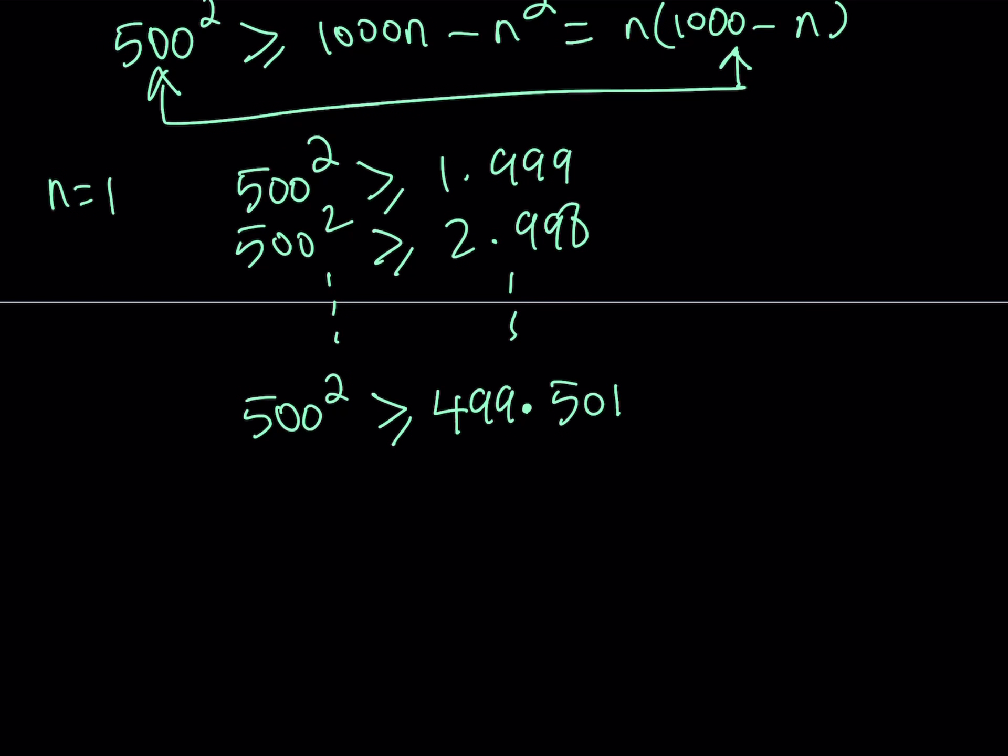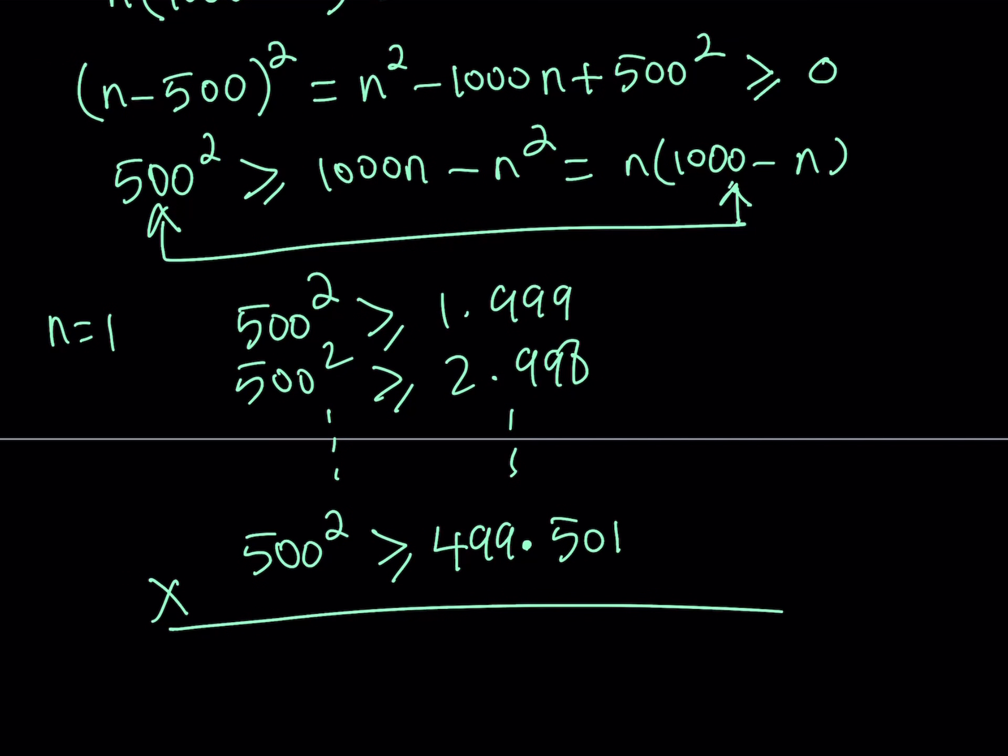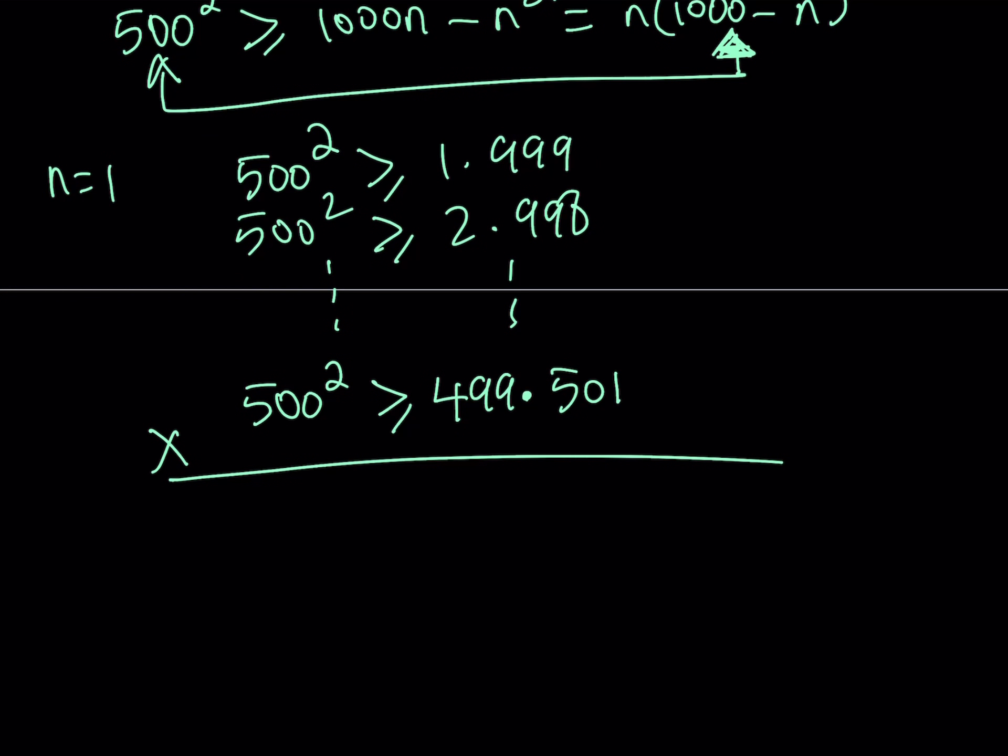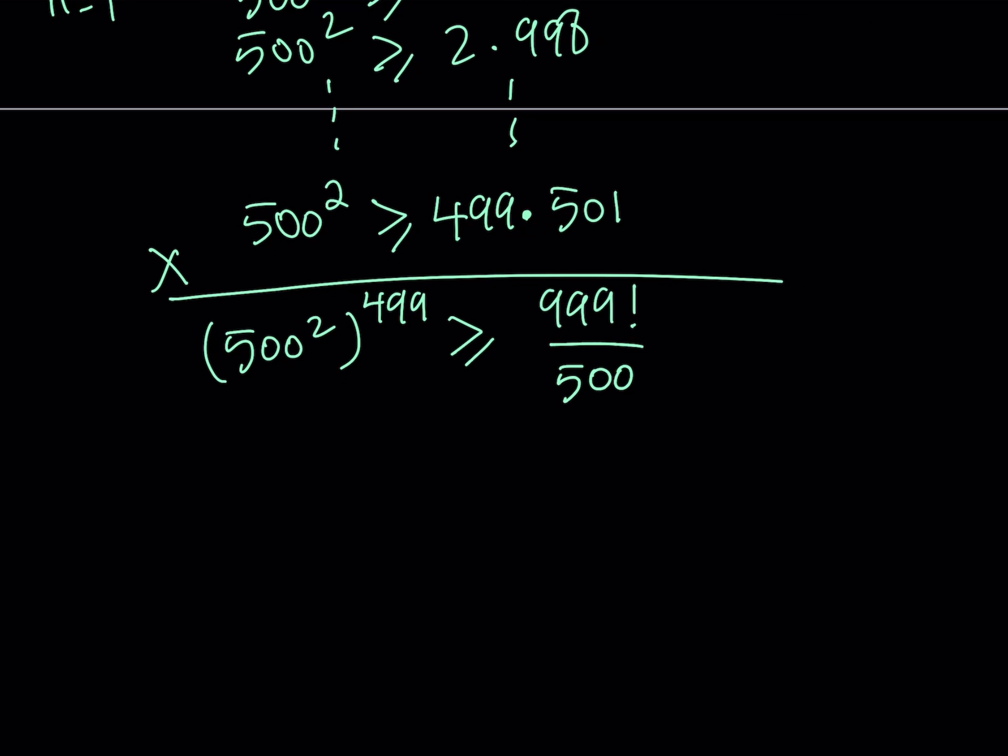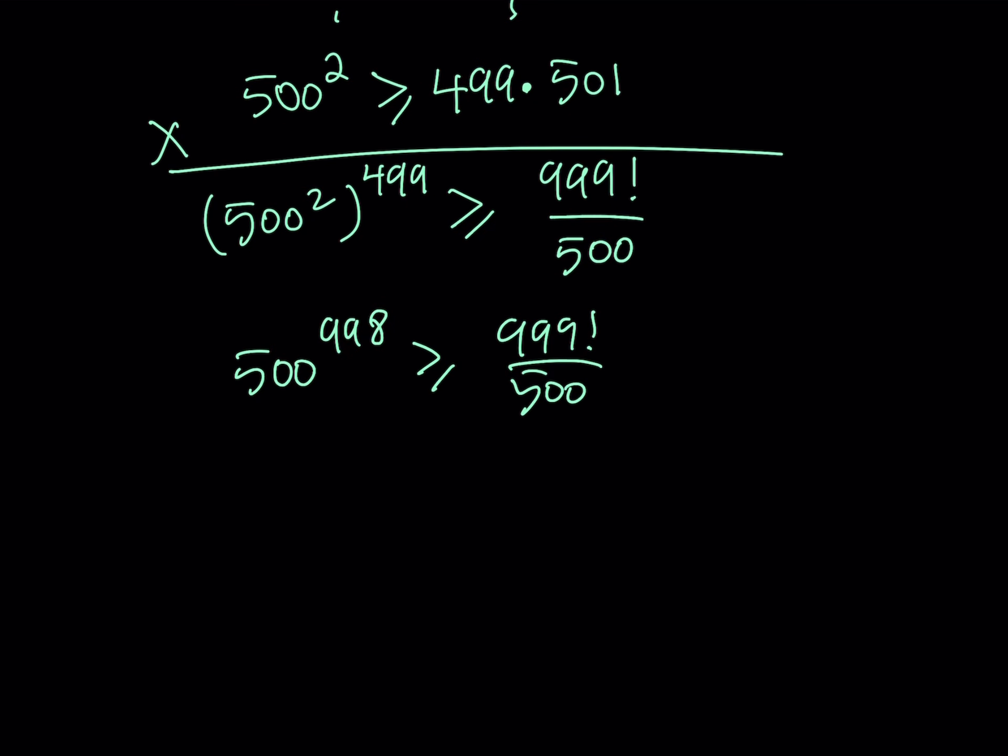Now I'm going to multiply these together. So here's my goal. First of all, I was able to compare 500 squared to something like this, and then I kept doing it. So that way, on the right-hand side of my inequality, I'm going to get something like 999 factorial. On the left-hand side, notice that I have 499 rows. So 500 squared is repeated 499 times. And on the right-hand side, I have 999 factorial, but I'm missing 500. So I just need to divide by 500. This gives me 500 to the power 998 is greater or equal to 999 factorial divided by 500.